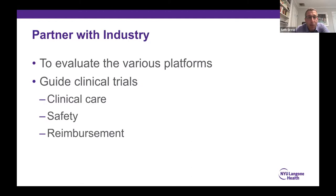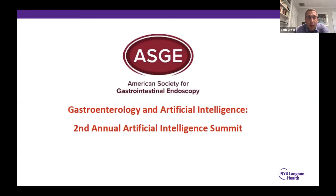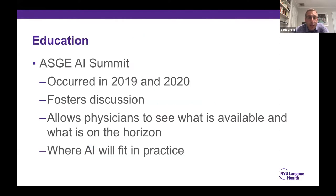Colon cancer is certainly preventable for patients who get screened and have surveillance. It's really important to partner with industry where societies can evaluate platforms, give guidance for clinical trials to impact clinical care, ensure safety, and help get reimbursement. We need some level of reimbursement in the future. Right now there's excitement and there will be early adopters, but if you really want to impact and change clinical care, reimbursement is something we have to think about. There was an AI summit two years in a row sponsored by the ASGE, led by Dr. Sharma — another important role of societies is offering education about where artificial intelligence is today and where it's going.